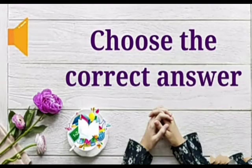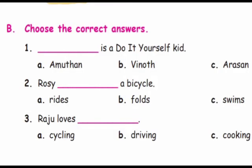Next: choose the correct answer. First one: dash is a do-it-yourself kid. A. Amudan. B. Vinoth. C. Arason. Answer: B. Vinoth.